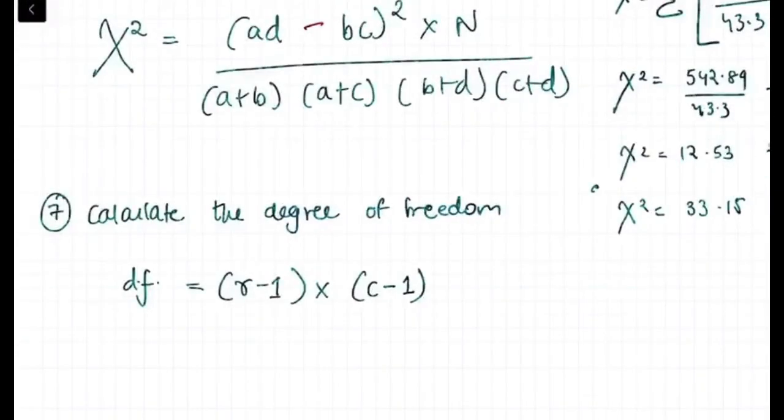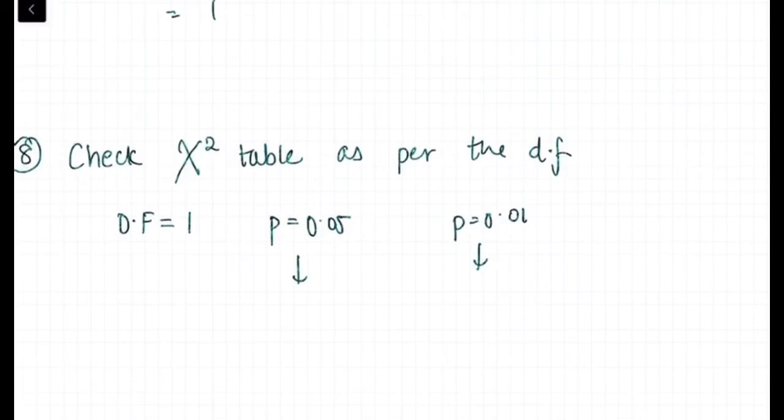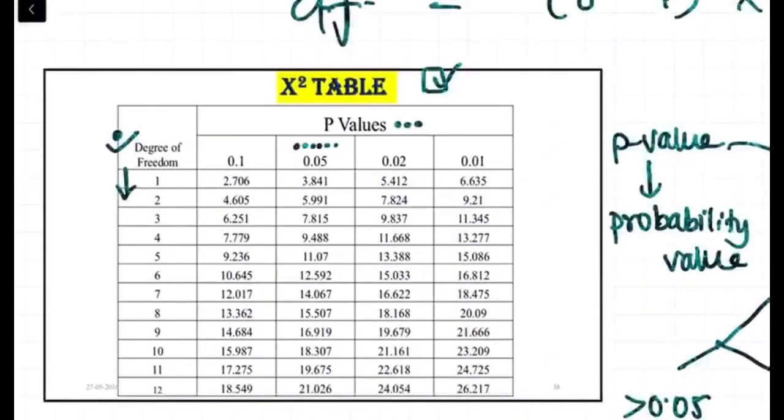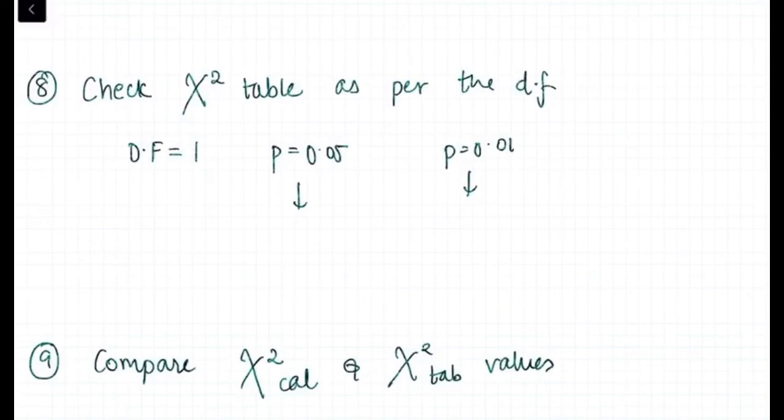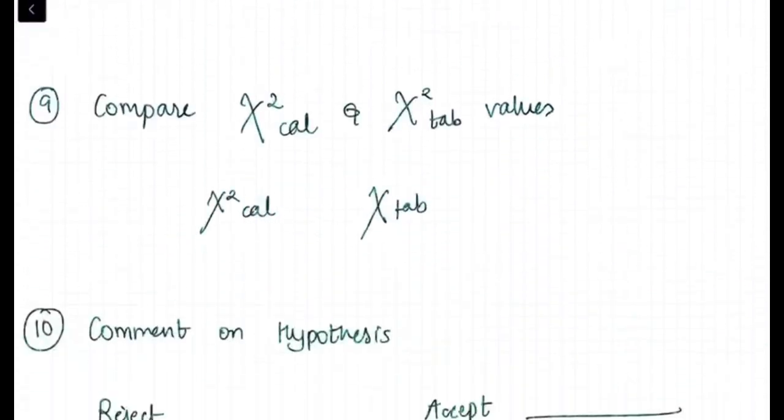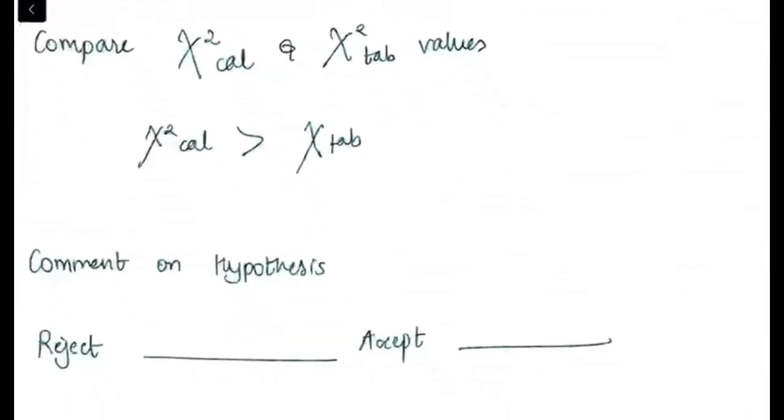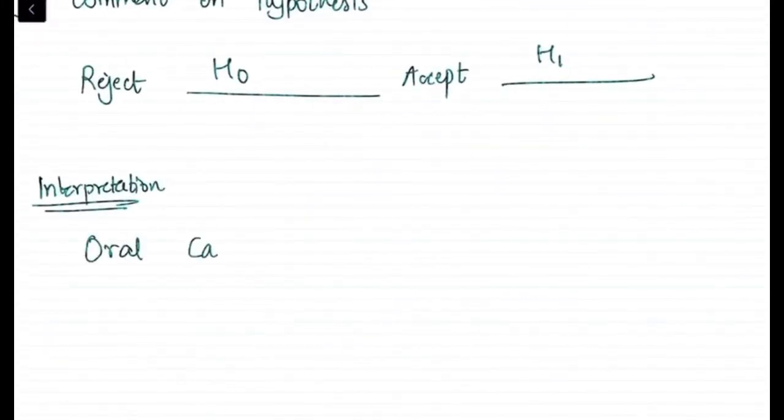Now the next step is calculating the degree of freedom, r minus one into c minus one. So two columns, two rows, so one is here. Now we will see the degree of freedom one p-value table. Degree of freedom one, 0.05, we will see our p-value then we will add here 3.84.